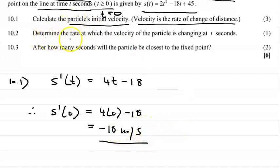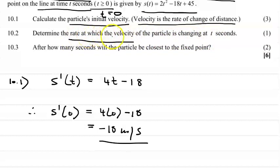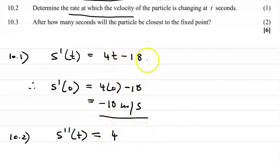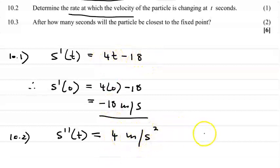The next question says: determine the rate at which the velocity of the particle is changing at T seconds. Rate of velocity means we find the second derivative. S''(T) = 4, since the derivative of 4T is 4 and the derivative of the constant -18 is zero. So the answer is 4 meters per second squared.